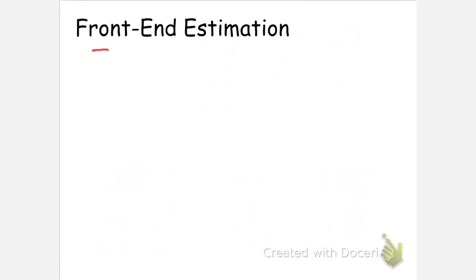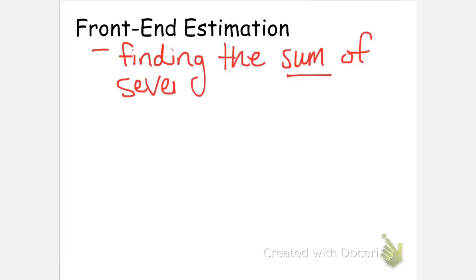The second estimation strategy that I'm going to talk about is front end estimation. And this is usually useful when you're going to be finding the sum of several numbers, meaning that you're going to be adding together more than two numbers. If that's the case, then this would be a good strategy to use.